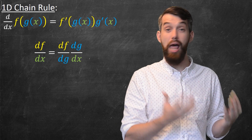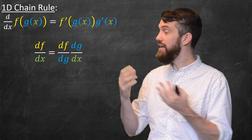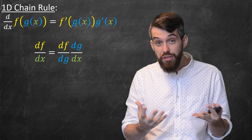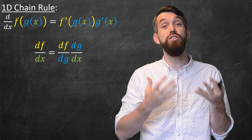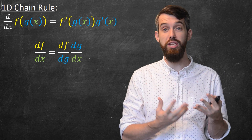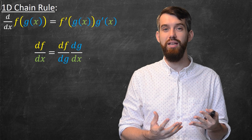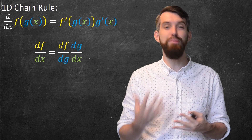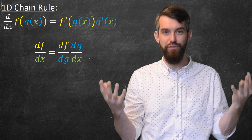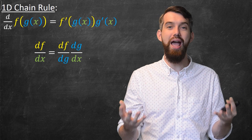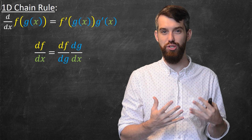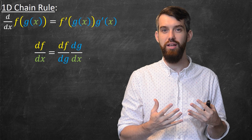I could also write this in Leibniz notation as df/dx, which is the product of two things: first df/dg, and then multiplied by dg/dx. Leibniz notation is really useful when you have a whole bunch of different variables, which is exactly what we're going to have in the higher dimensional situation.